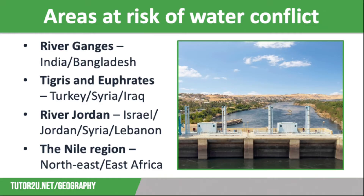We then have the area of Turkey, Syria, and Iraq. These countries are competing for water from the Tigris and the Euphrates rivers, which are a vital resource, particularly as Syria and Iraq both have really low rainfall. However, Turkey has built a series of dams along both rivers, affecting the water supply further downstream in Syria, meaning there is less water available for agriculture and domestic use.